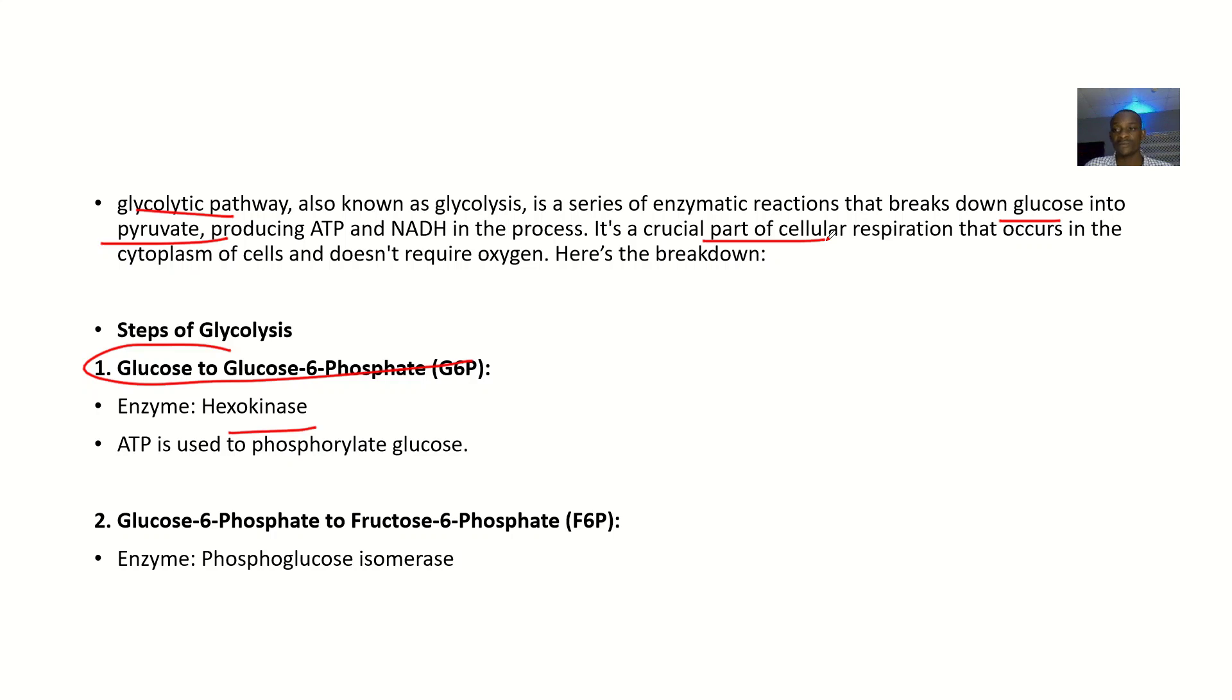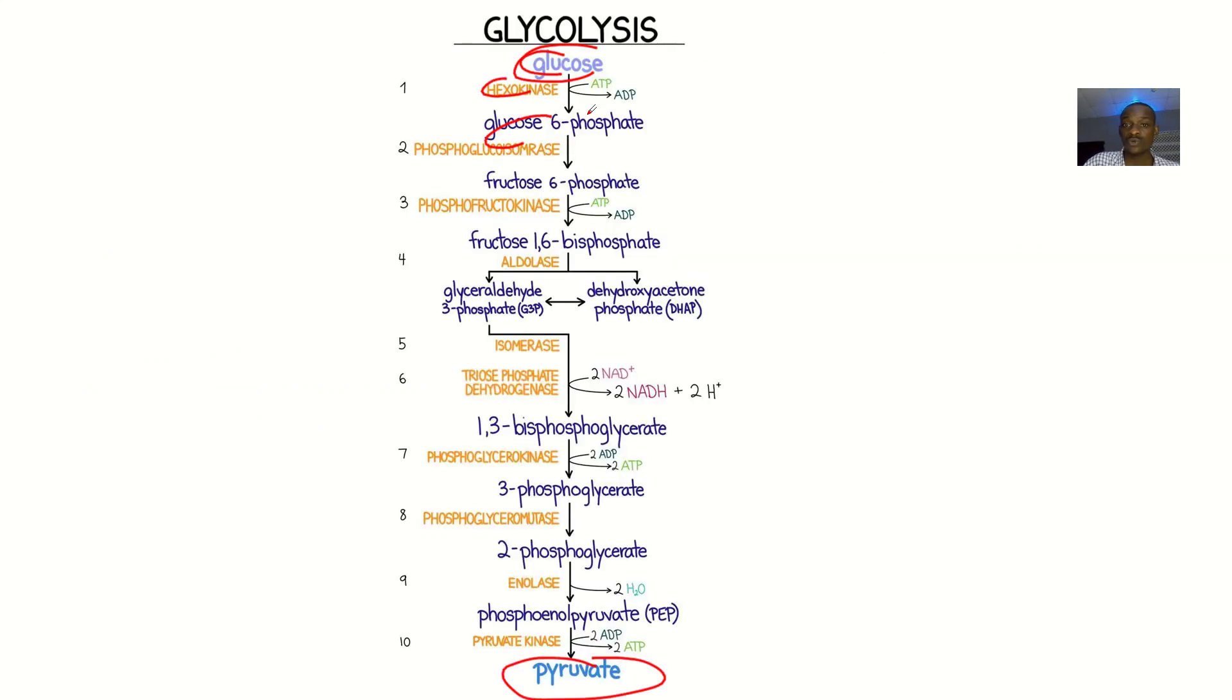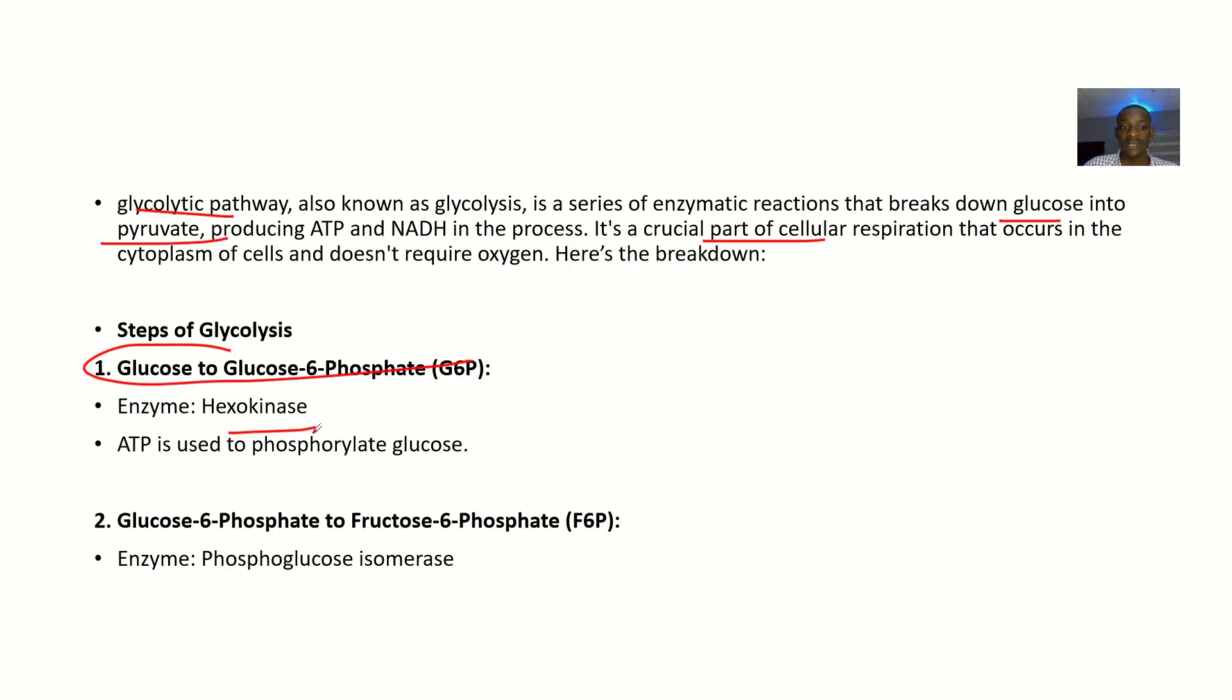For step one, glucose is converted into glucose-6-phosphate. The enzyme there is hexokinase. ATP is used so that glucose can become phosphorylated. When saying phosphorylation, we're simply saying a phosphate group is being added to glucose at position six. That's why it is glucose-6-phosphate.